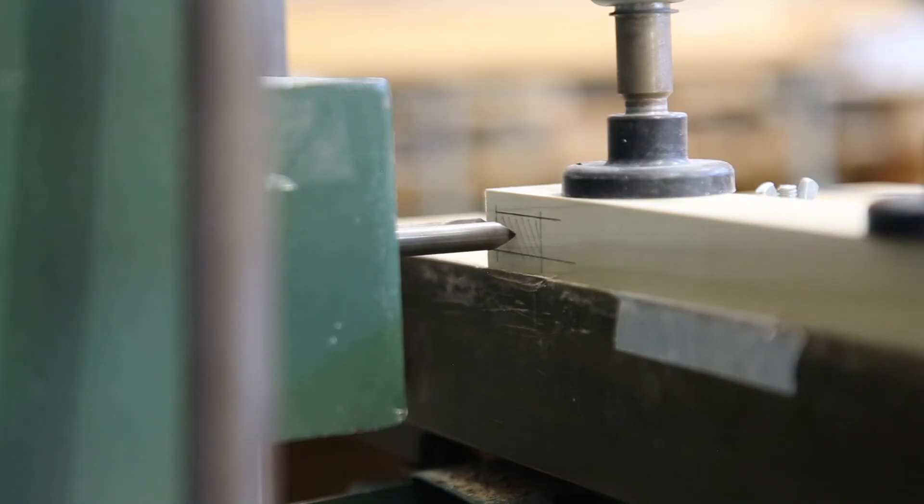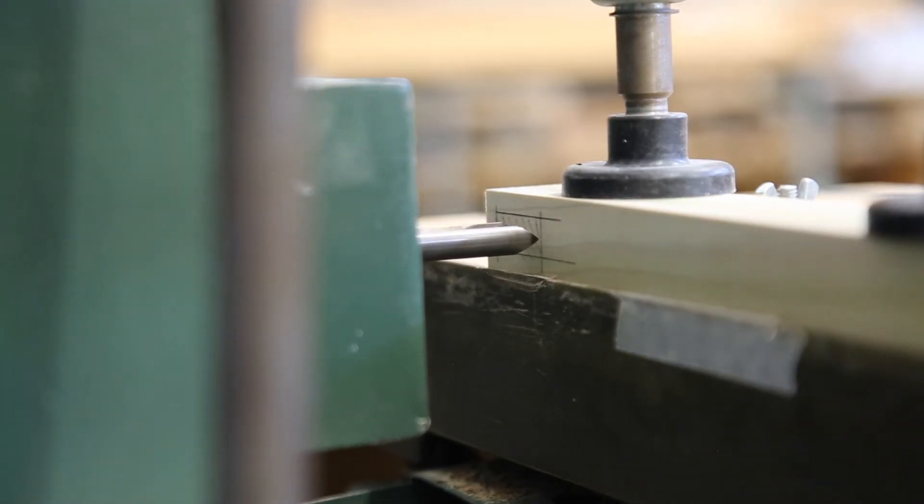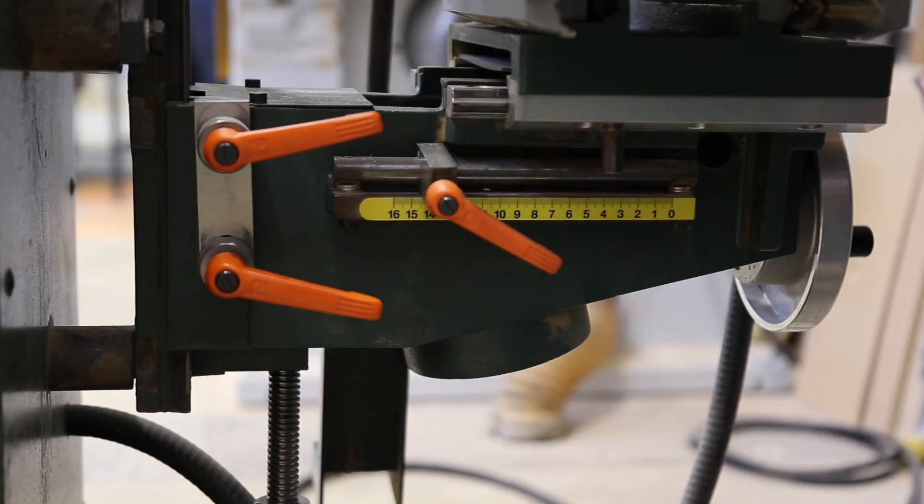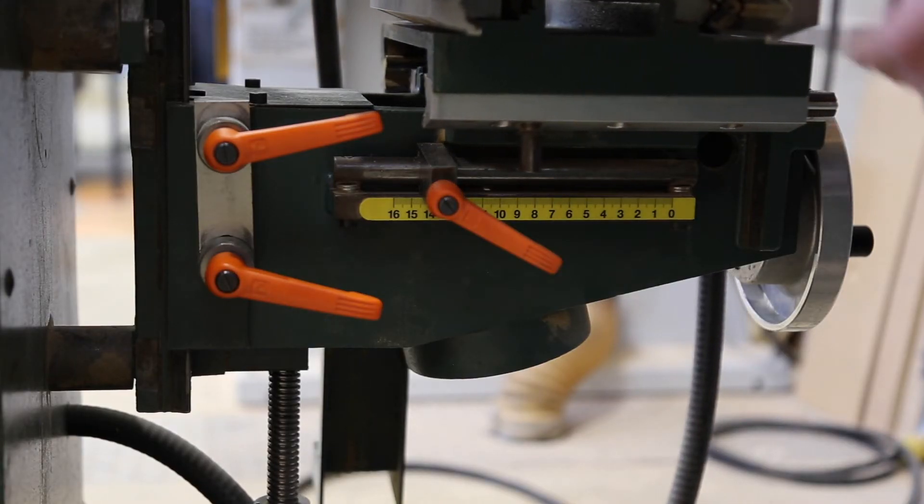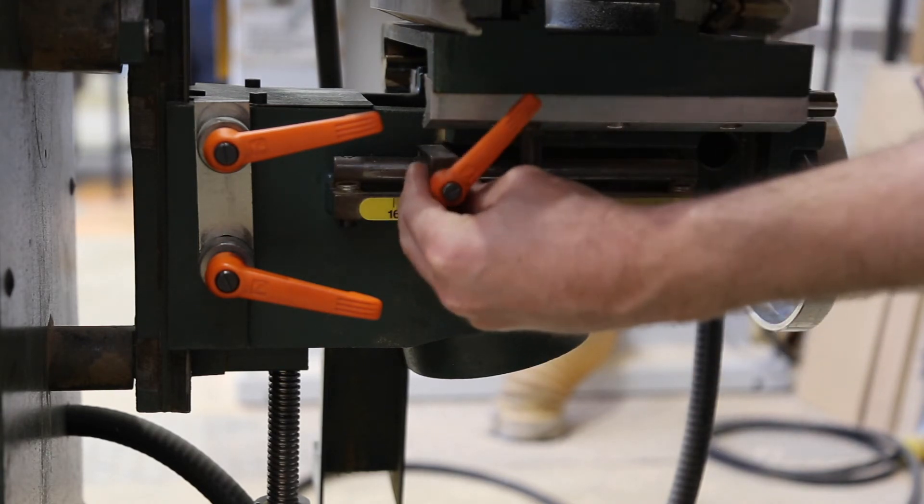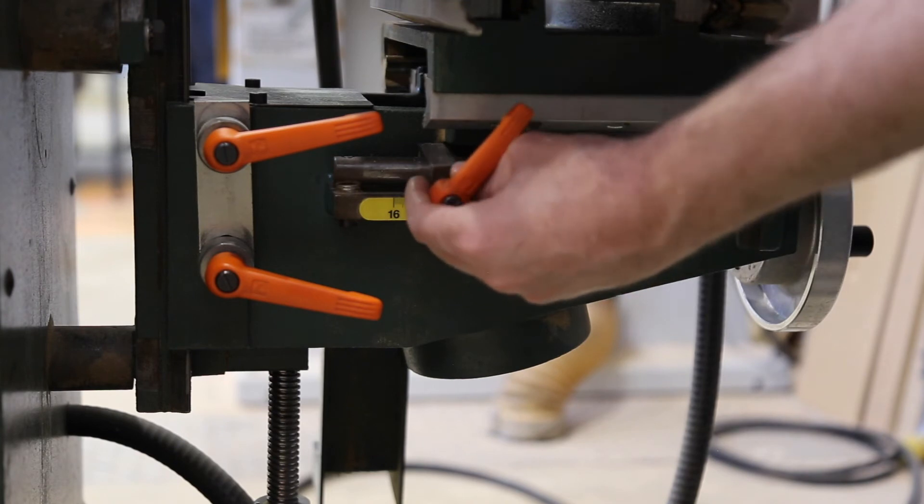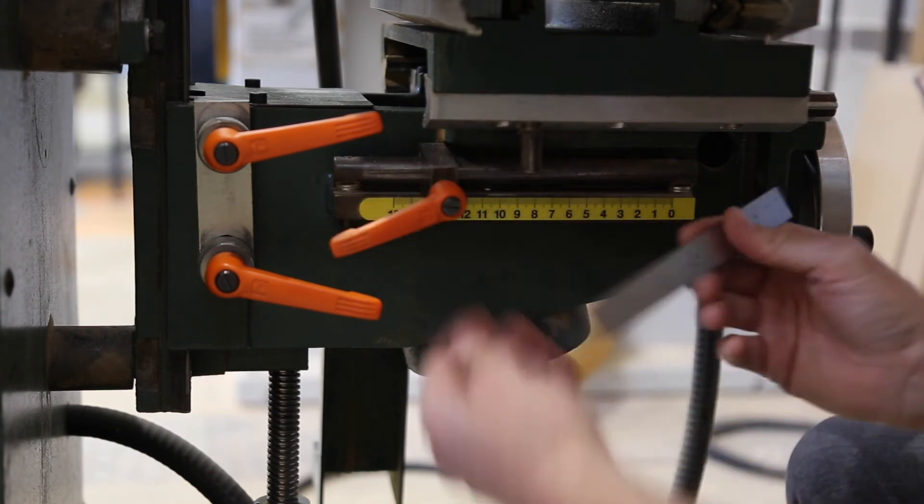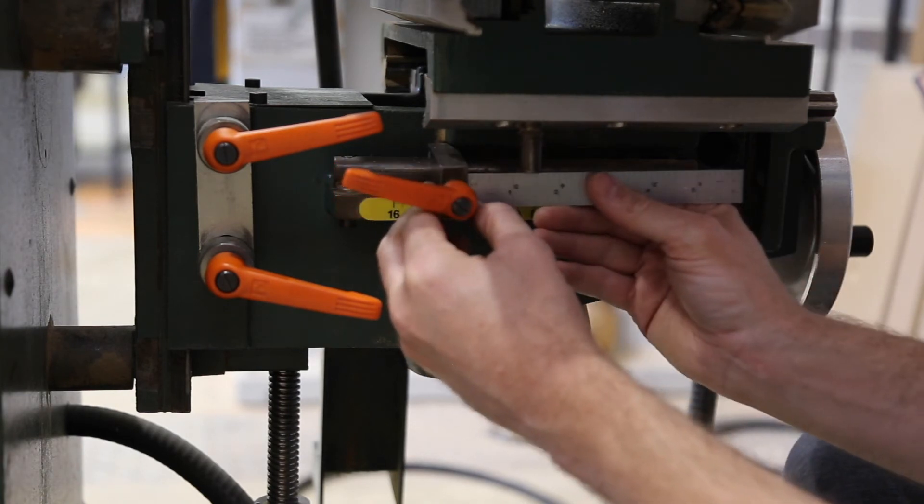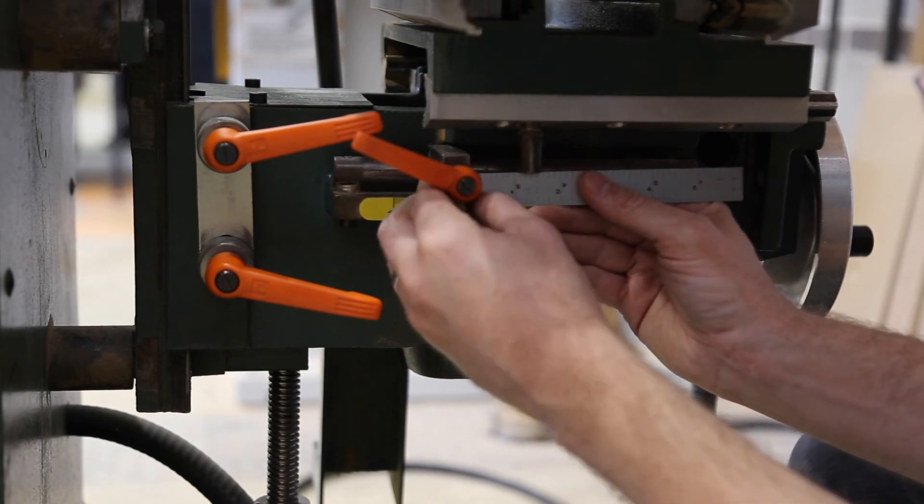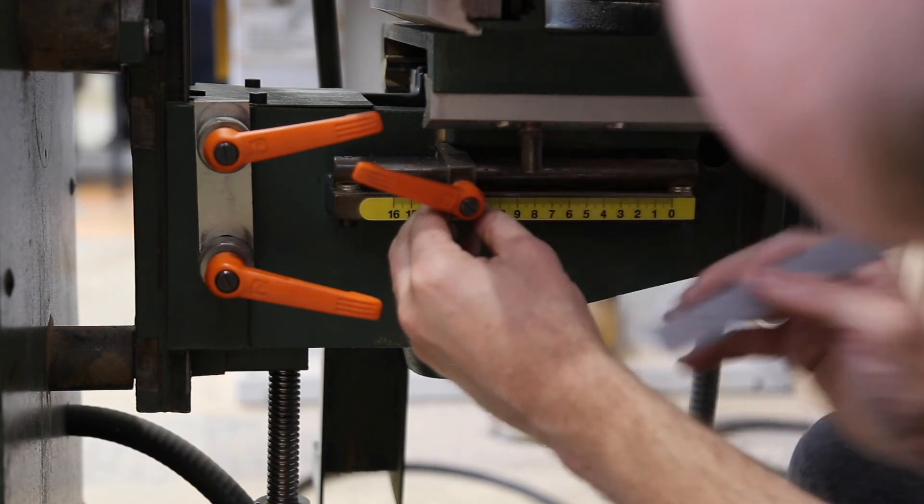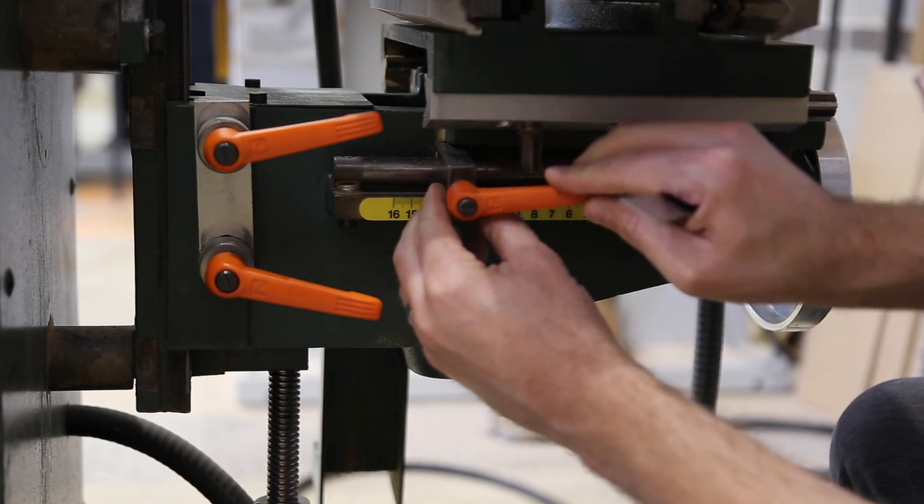Now that your width of travel has been set, double check that this is consistent with the mortise you've marked out on your workpiece. Finally we need to set the depth of cut. Move the bit so that the prongs just touch the face of your workpiece. Unlock the stop along the rail on the side of the machine. Carefully set it at the same distance from the pin that you wish the depth of your mortise to be. Obviously be mindful of how long your bit is. I'll be setting my depth of cut here to an inch and an eighth. Lock your stop in place.